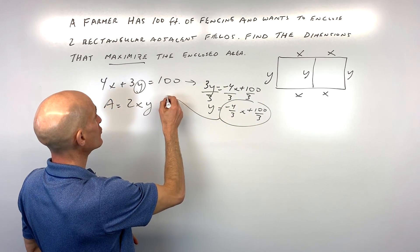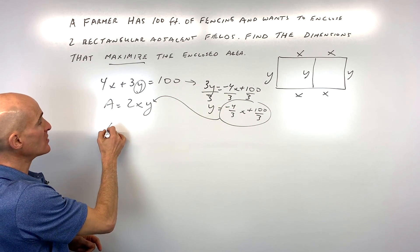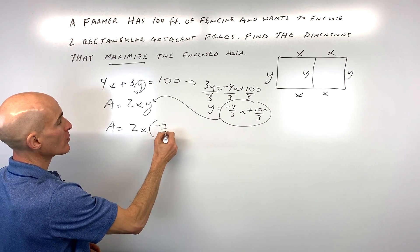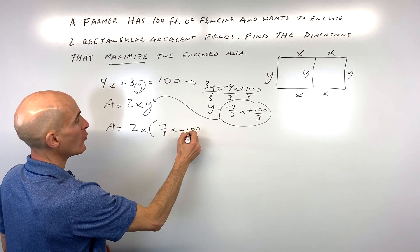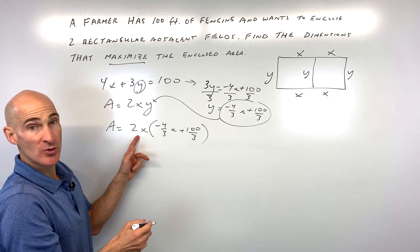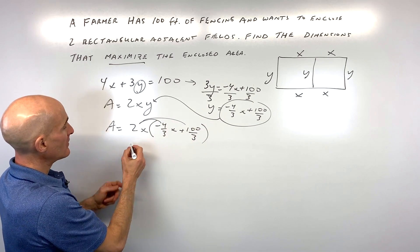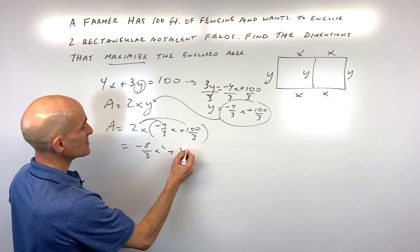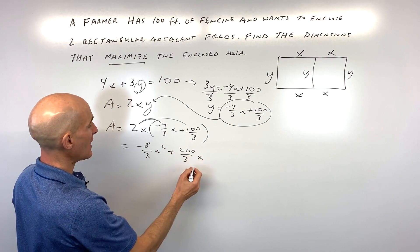We can then substitute or put that in place of Y here. So let's go ahead and do that. So area equals 2X times negative 4 thirds X plus 100 over 3. And now what we're going to do is we're going to distribute the 2X. And let's see what that gives us. So it's negative 8 thirds X squared plus 200 over 3X.